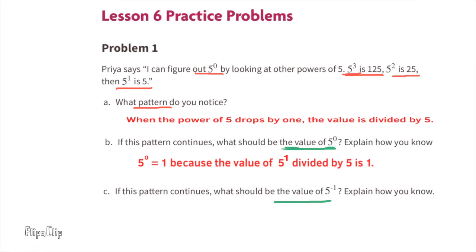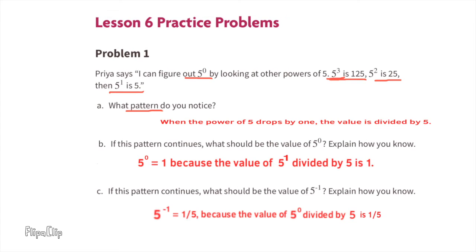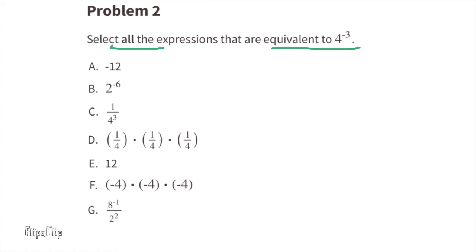Part c: If this pattern continues, what would be the value of five to the power of negative one? Explain how you know. Five to the power of negative one equals one fifth, because the value of five to the power of zero, which is one, divided by five is one divided by five, or one over five, which is one fifth.